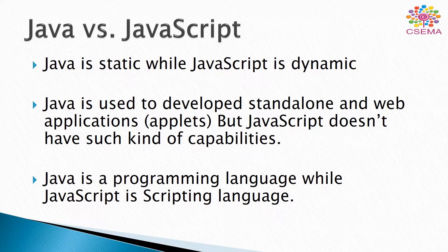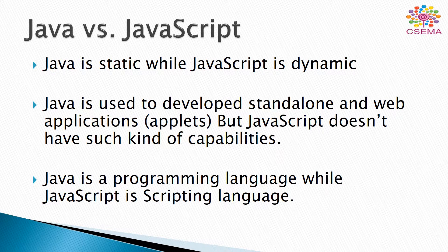Java is static while JavaScript is dynamic. In Java the objects cannot be changed at the runtime, while the data and member functions of the objects can be changed at the runtime in JavaScript. That's why JavaScript is dynamic in nature. Java is used to develop stand-alone and web applications called applets.